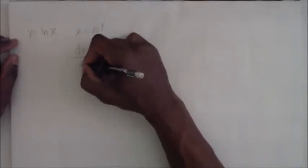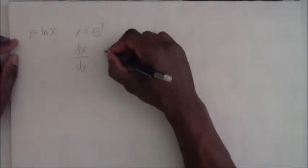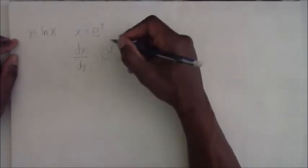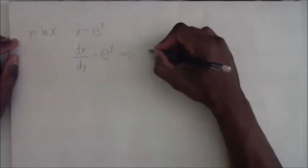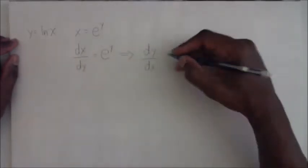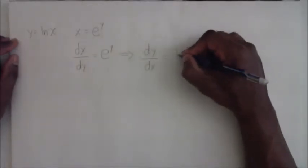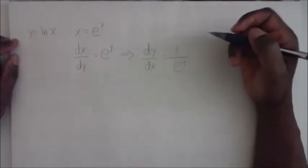And that implies then that dy over dx, just going to take the reciprocal, is equal to one over e to the y. Well, we know from here that e to the y is equal to x.